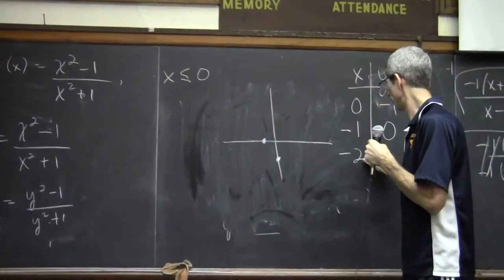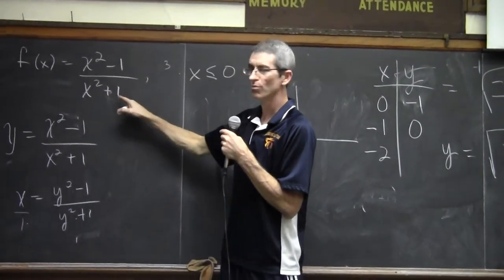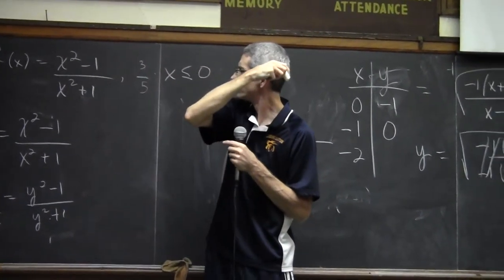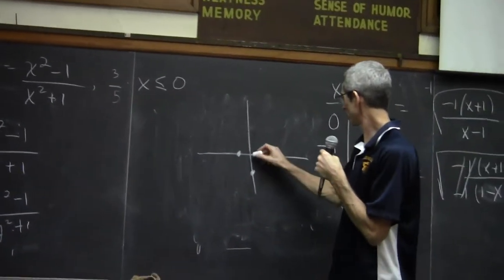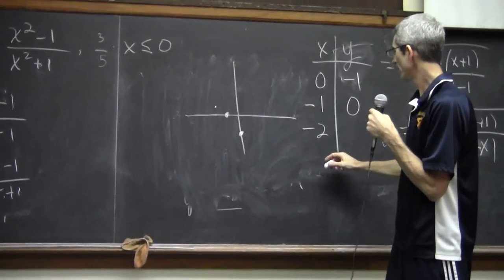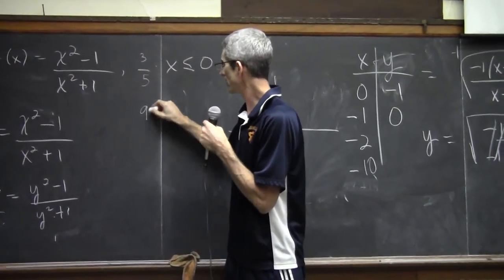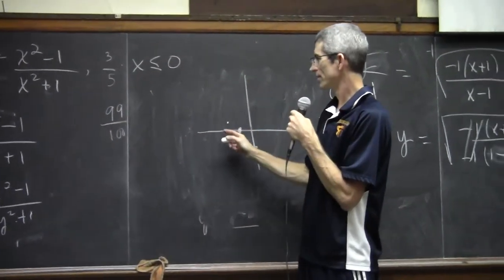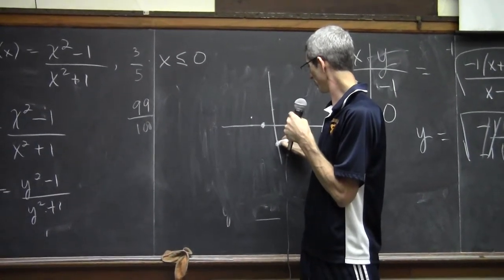When x is negative 2, that's going to be 2 times 2 is 4. 4 minus 1 is 3 on top. 2 times 2 is 4. Plus 1 is 5 on the bottom. 3 fifths. Did I do that right? Clyde, are you looking? Pay attention. So 3 fifths. So when it's negative 2, y is up a little bit. And then I think what's going to happen, let's just jump ahead to like when x is say negative 10. That's going to be 100 minus 1 is 99. That's going to be 100 plus 1 is 101. So it's getting closer and closer to 1, right? It's going from 3 fifths. So I think what's going to happen is it's never going to quite make it to 1.